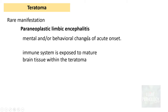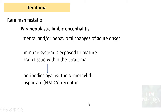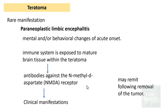What does paraneoplastic limbic encephalitis mean? In patients with teratoma, the manifestation can be so unusual that they present with mental and/or behavioural changes of acute onset. This happens because the immune system is exposed to mature brain tissue found within the teratoma. Antibodies are formed against the N-methyl D-aspartate receptor (NMDA receptor), causing these clinical manifestations. It is a very rare manifestation, and symptoms may remit following removal of the tumour.